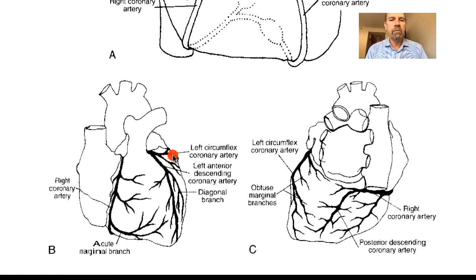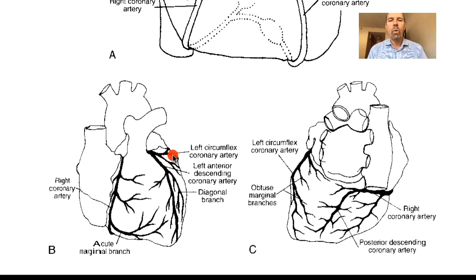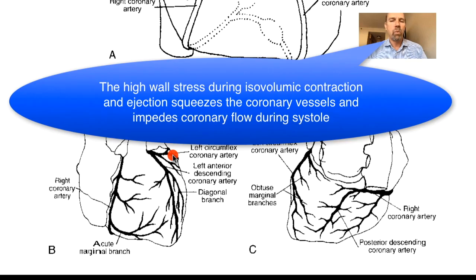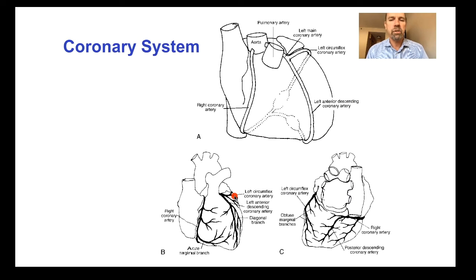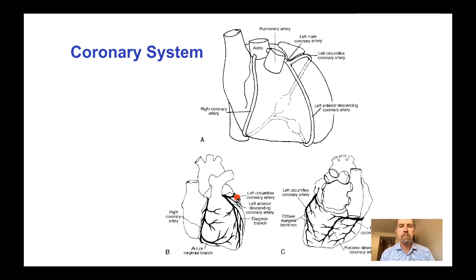Most of the coronary blood flow occurs during the diastolic phase of the cardiac cycle when the driving pressure is lower but the wall stress is much lower. Every other circulation in the body receives higher flows during the systolic phase when the driving pressure is higher.